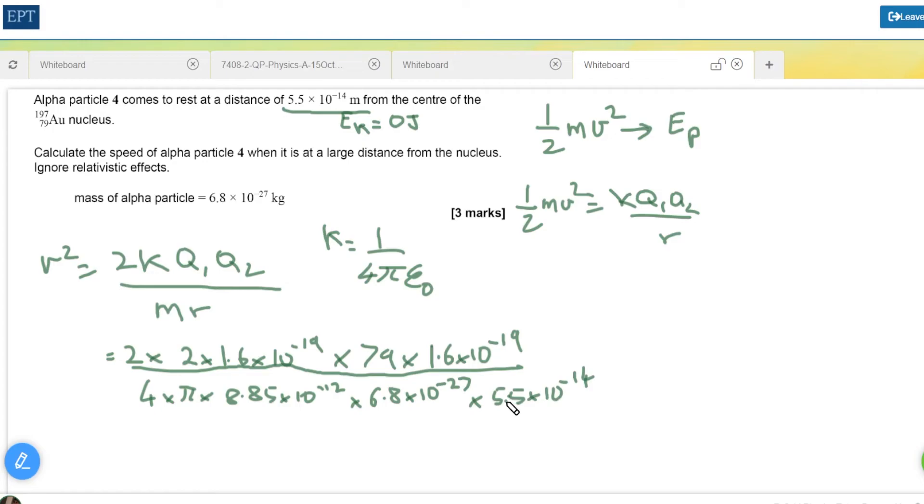Remember that all of that gives us v squared so we need to take the square root. I always have to do these calculations several times because I always get a different answer the second time I do it. However, after three times normally it's settling down to a consistent answer which for me comes out as 1.4 times 10 to 7 meters per second.